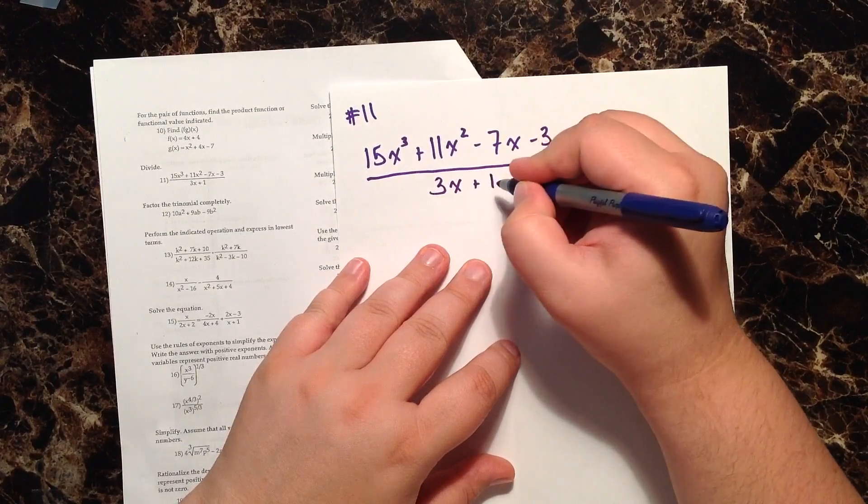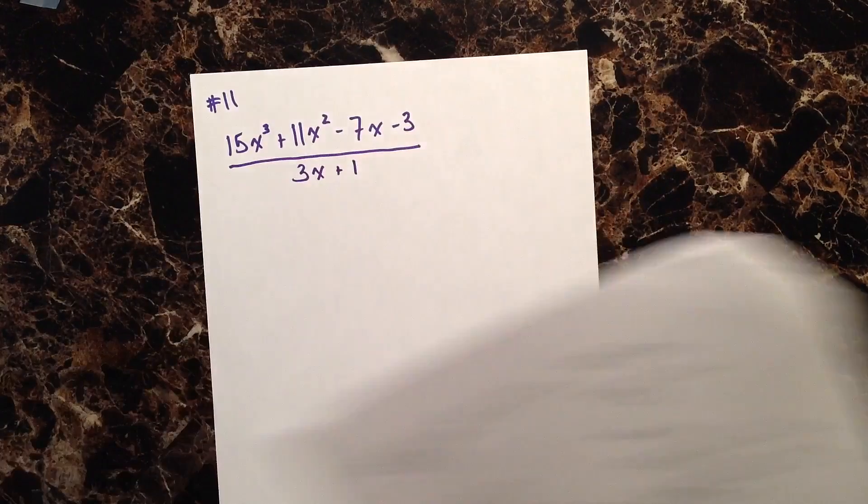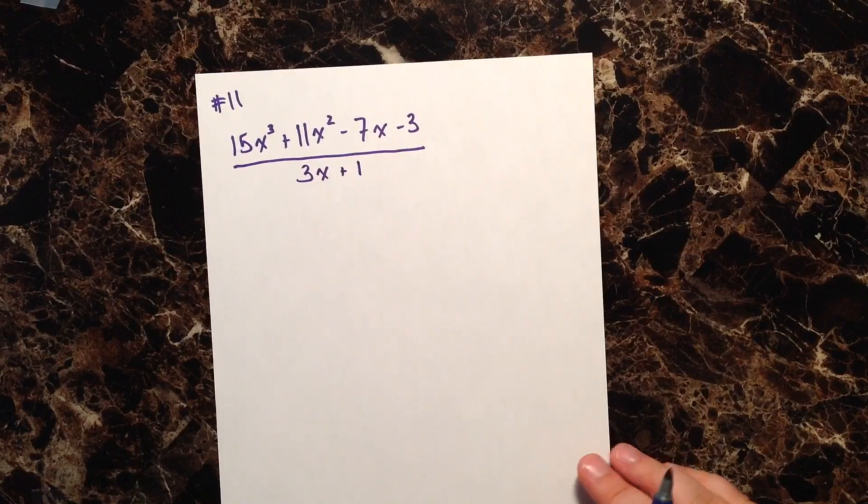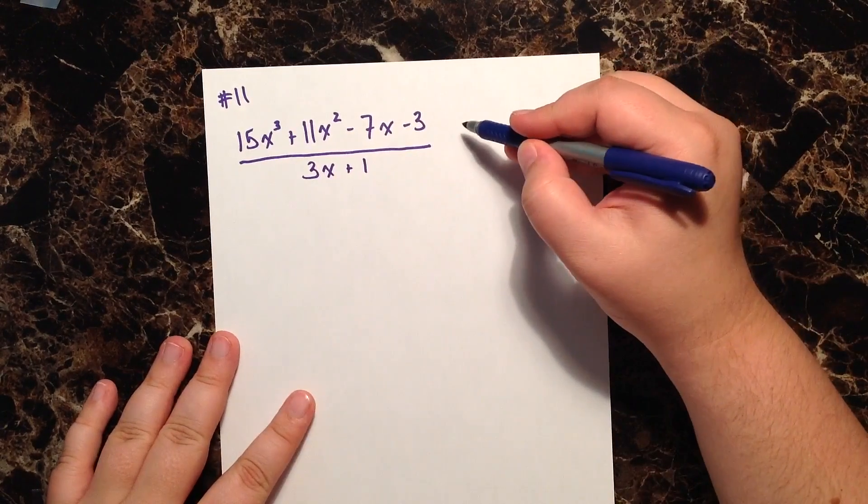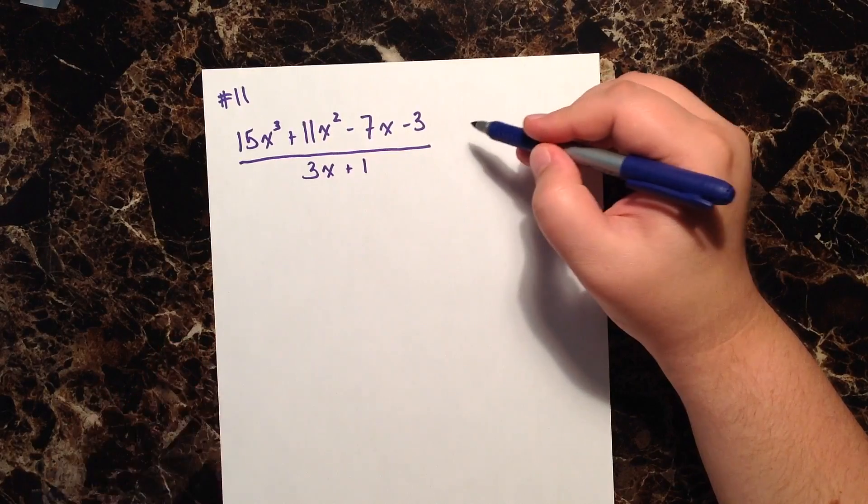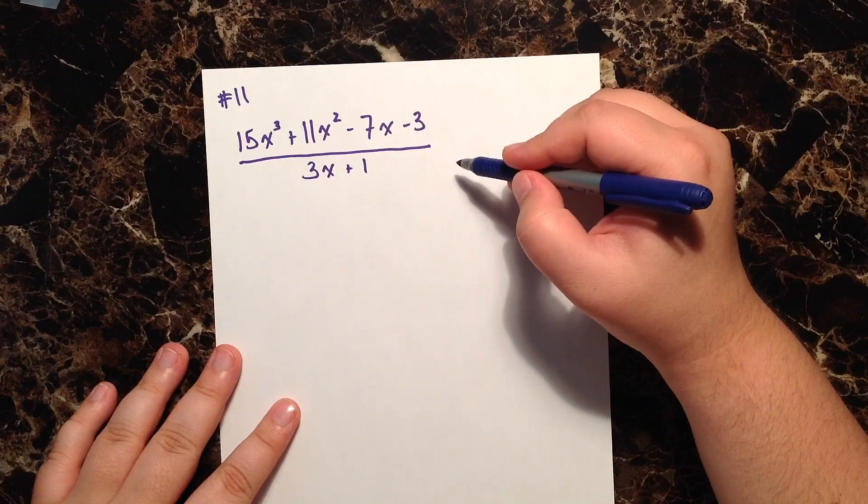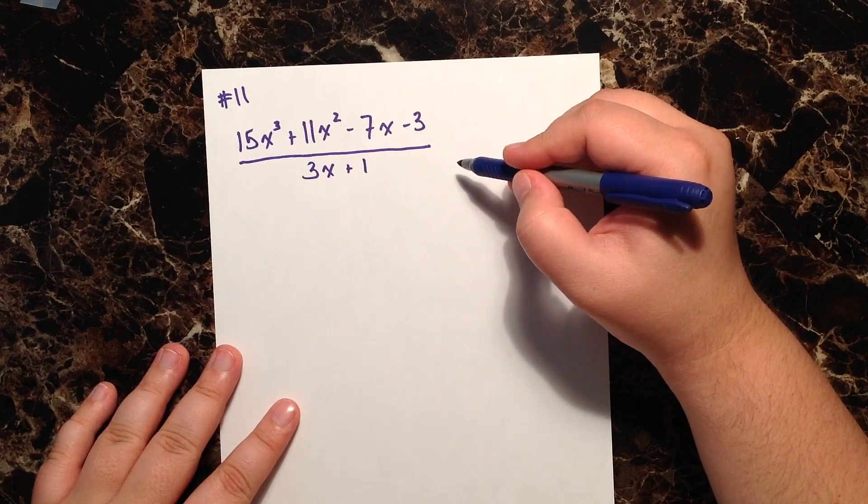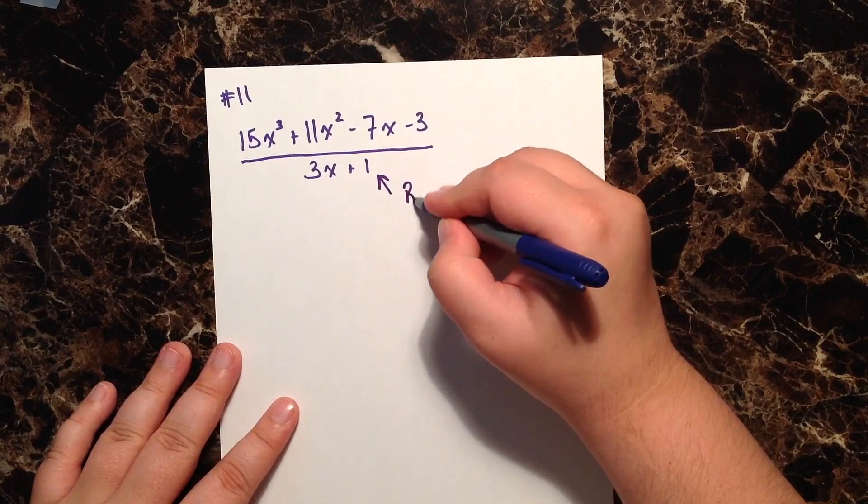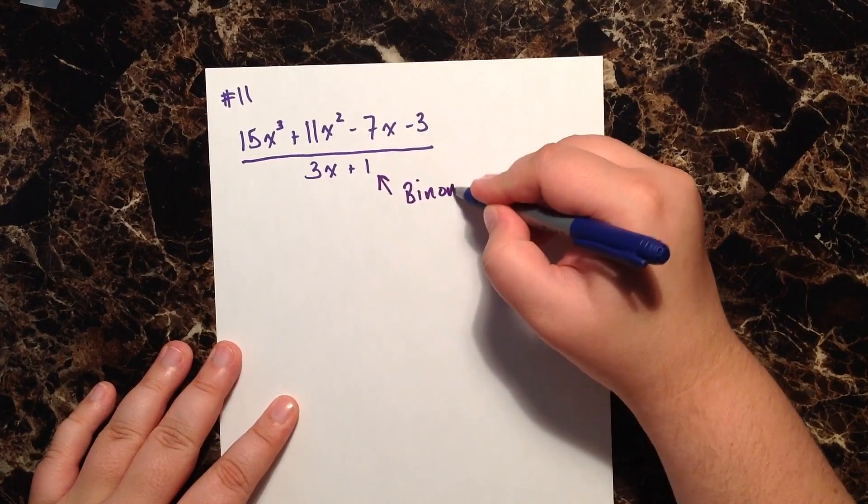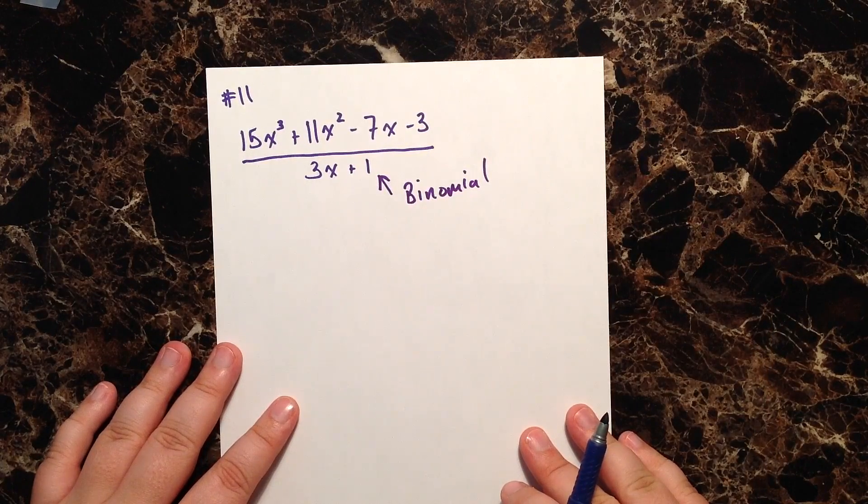All right, let's go ahead and put this aside and we'll work on what they've given us. I see that in my numerator, which is the top, I have a polynomial and then my denominator is a binomial.